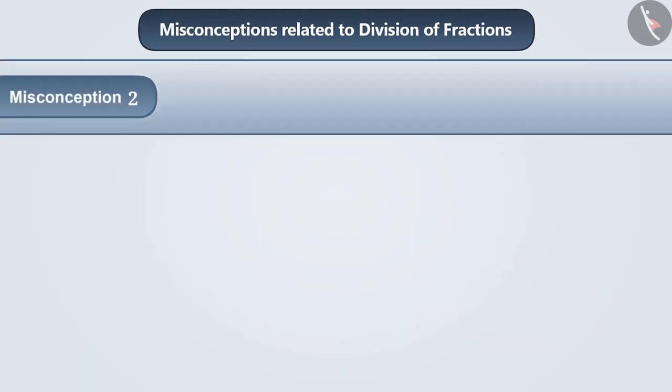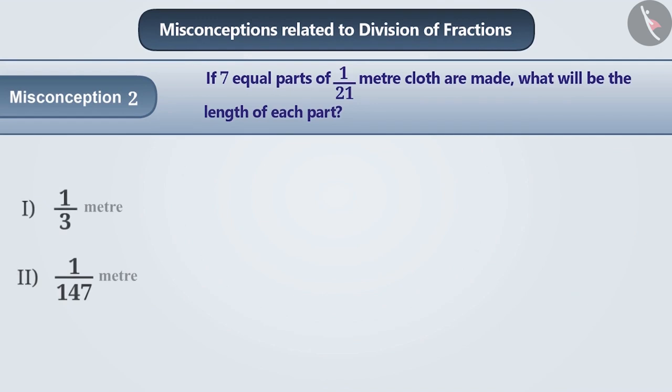Misconception 2. If 7 equal parts of 1 by 21 meter cloth are made, what will be the length of each part?